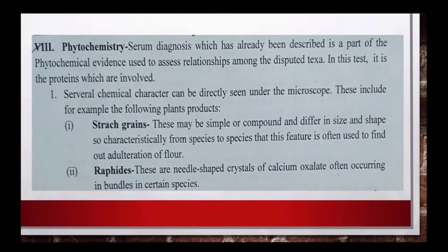इसके अलावा और भी बहुत से chemical characters study किये जाते हैं। कुछ ऐसे chemical characters हैं जिनको direct microscope से देख लिया जाता है, लेकिन कुछ ऐसे भी characters होते हैं जिनको chemical test किया जाता है, उसके बाद पता चलता है। यहाँ पर हम देख रहे हैं starch grains और raphides। Starch grains simple भी हो सकते हैं और compound भी हो सकते हैं, different size के भी हो सकते हैं - अलग-अलग species में यह अलग-अलग हो सकते हैं।